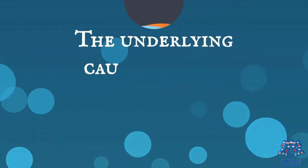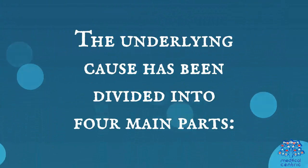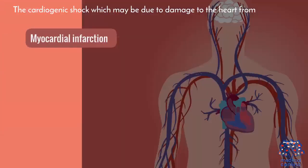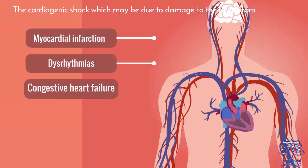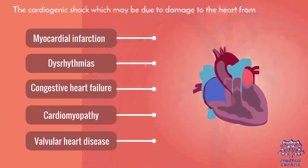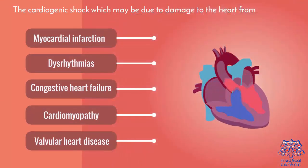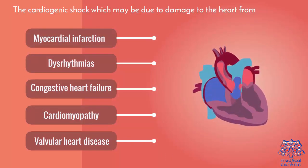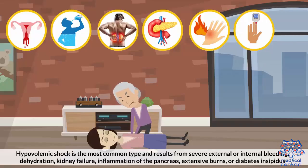The underlying causes have been divided into four main parts. Cardiogenic shock may be due to damage to the heart from myocardial infarction, dysrhythmias, congestive heart failure, cardiomyopathy, or valvular heart disease. Hypovolemic shock is the most common type and results from severe external or internal bleeding, dehydration, kidney failure, inflammation of the pancreas, extensive burns, or diabetes insipidus.